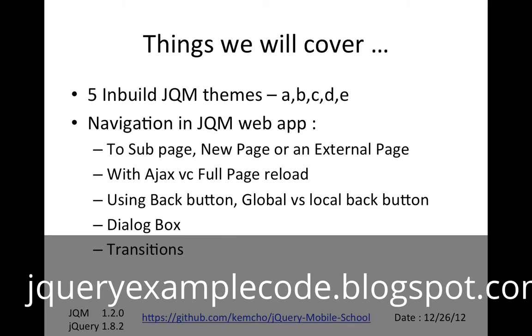jQuery Mobile comes with inbuilt themes — it has five themes out of the box. A theme is basically a look and feel: color, layout, icons, etc.